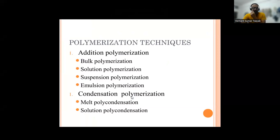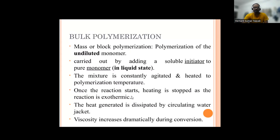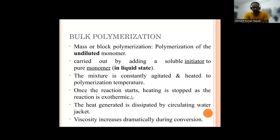In addition polymerization we have to study bulk polymerization; next is condensation polymerization, which includes melt and solution polymerization. Bulk polymerization is also called mass or block polymerization — it is the polymerization of undiluted monomers. Monomers are the basic unit for the polymer, and in this technique the monomer is undiluted, so we don't need to dilute it.